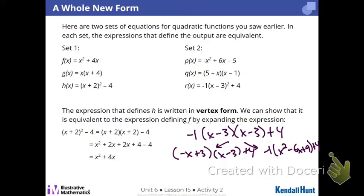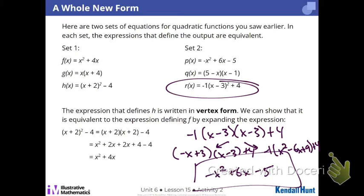So either way, when you do that, we would end up with negative x squared plus 6x minus 5, which shows that this vertex form is the same function as this standard form. So that's where we're going to stay. We know there is another form that gives us the same function. It just looks different.